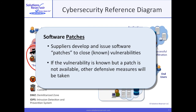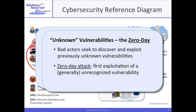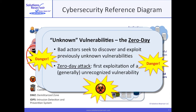Bad actors seek to exploit vulnerabilities that have yet to be repaired or patched in a security update, or before other defensive measures have been taken. In particular, bad actors seek to discover new vulnerabilities. The first exploitation of a newly discovered vulnerability for which no patch is available, or even under consideration, is called a zero-day attack — a very dangerous condition for its potential to cause undetected trouble. For example, the Heartbleed vulnerability in OpenSSL was undetected for about two years, so only some unknown bad actor is certain of the zero-day attack on it.